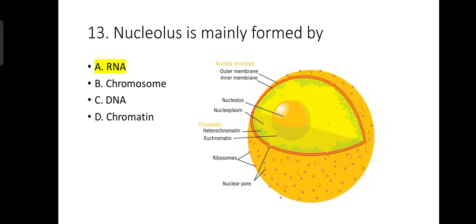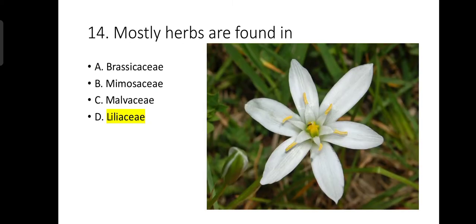Number 13: Nucleolus is mainly formed by RNA. Number 14: Mostly herbs are found in Liliaceae. Liliaceae is the family of flowering plants which contains mostly herbs.